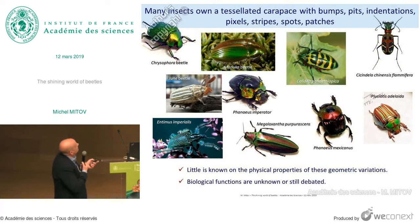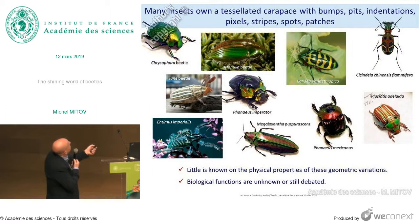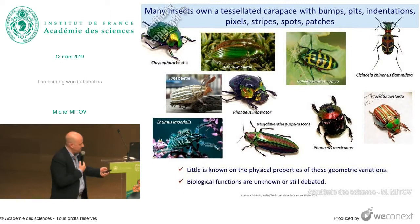In fact, there are many insects which own a tessellated carapace with bumps, pits, indentations, pixels, stripes, spots, and patches, and little is known about the physical properties. The geometric variation and the biological function are still in debate.